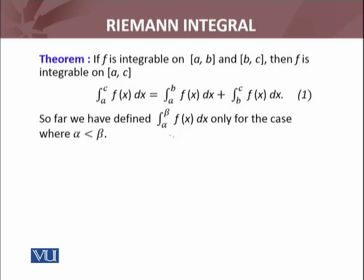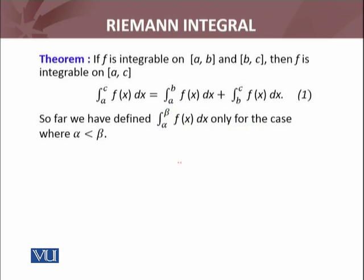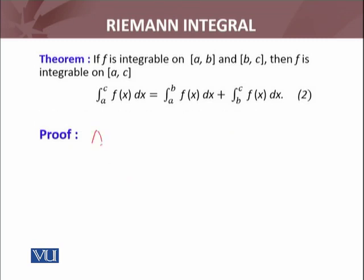So far we have defined the integral from alpha to beta of f(x) dx only for the case when alpha is less than beta. Similarly, we can define — if alpha is less than beta — the integral from beta to alpha: if we change the limits, the integral from beta to alpha of f(x) dx equals minus times the integral from alpha to beta. The second point is that the integral from alpha to alpha of any function is defined as zero.